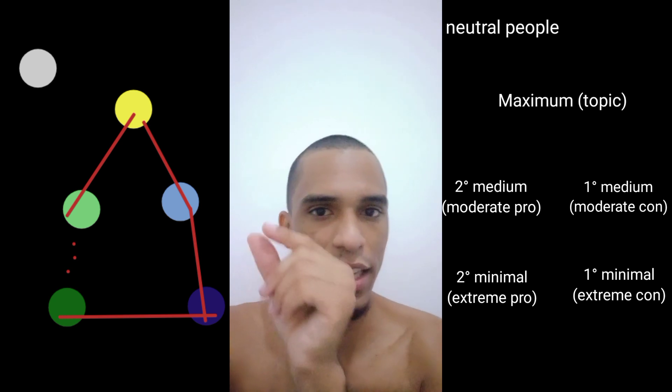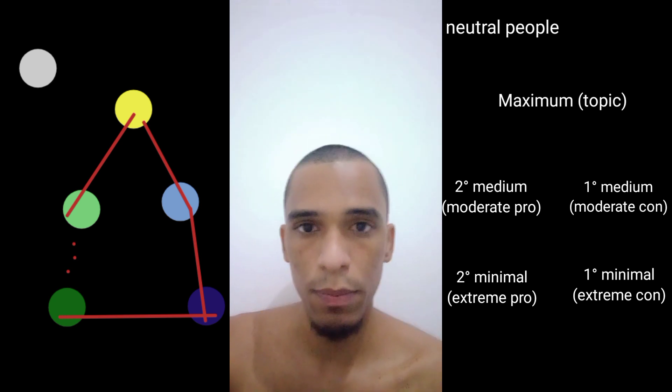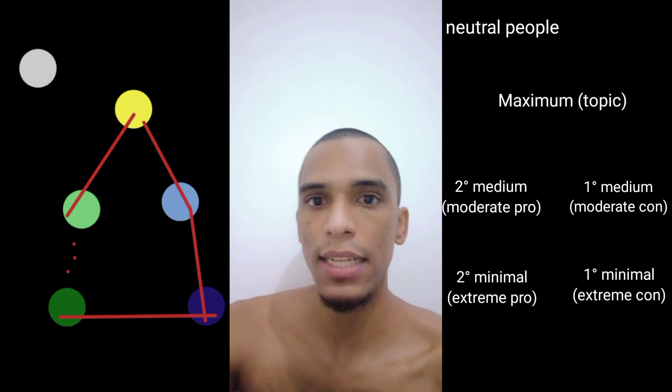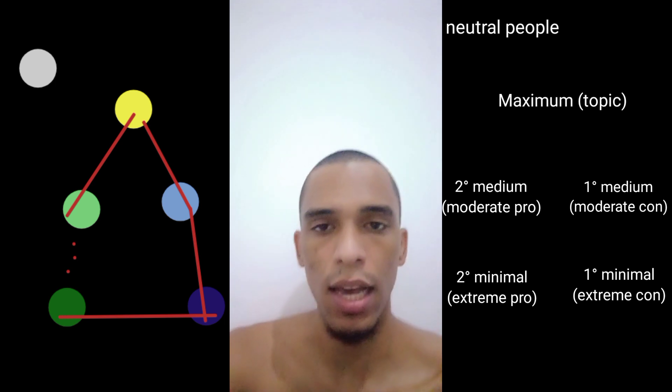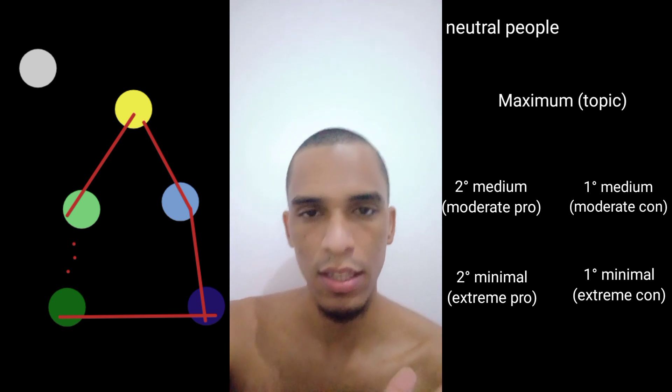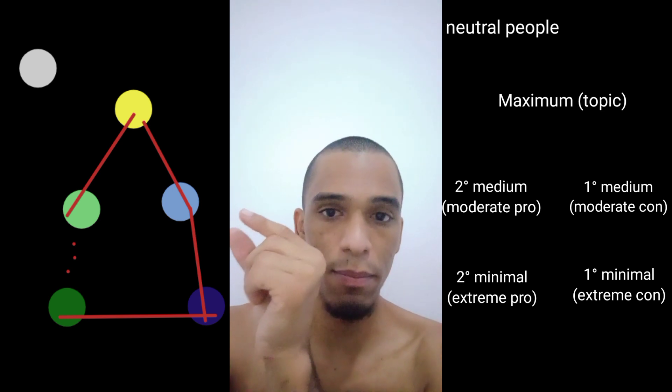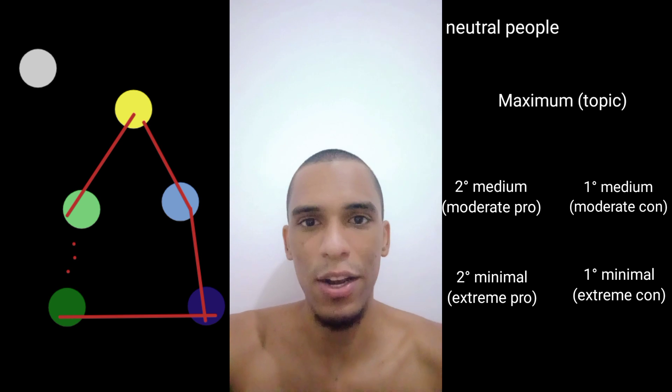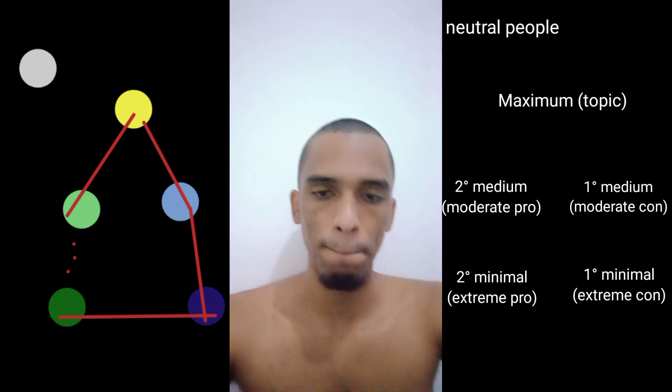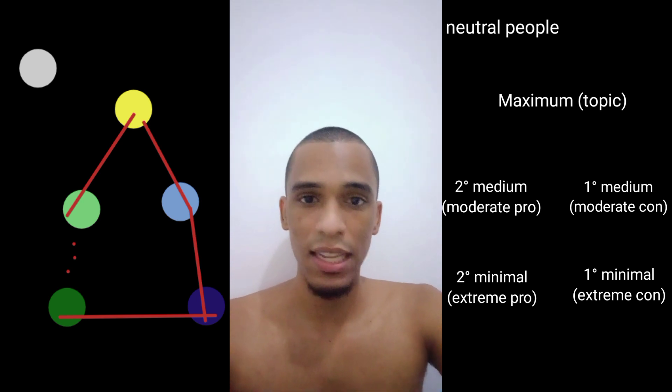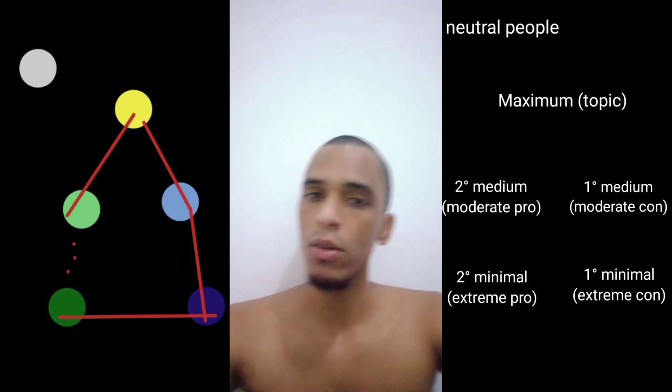Now the second minimum. The second minimum is basically directly related to the hate because it's the opposite. We have basically the pro, or love, or agree, or like, whatever you want, about this topic. It's basically the same as the hate.